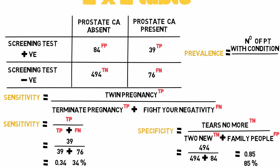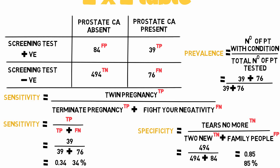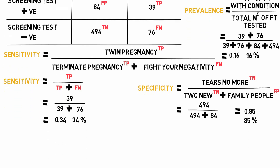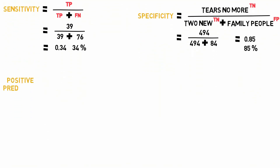Next, prevalence equals the number of patients with the condition divided by the total number of patients tested, which equals the right-hand column patients who actually have the condition: 39 plus 76, divided by all four boxes — 39 plus 76 plus 84 plus 494 — which equals 0.16 or 16%.